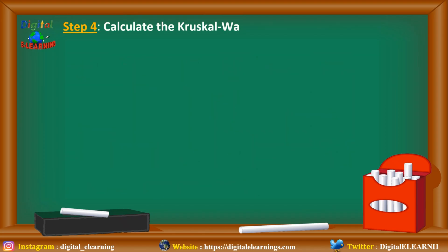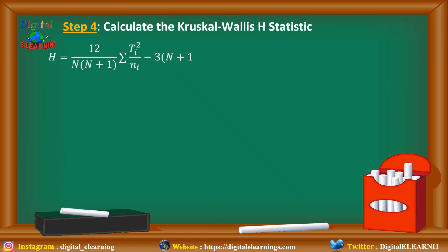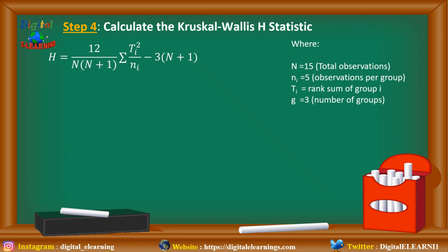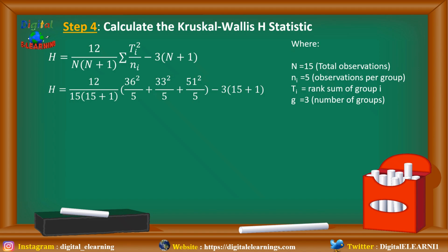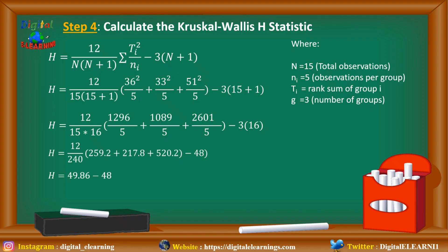Step 4: calculate the H statistic. Using the formula H = (12 / (n(n+1))) × Σ(Tᵢ² / nᵢ) − 3(n+1), with n = 15 total observations and nᵢ = 5 per group: H = (12 / (15 × 16)) × (36² / 5 + 33² / 5 + 51² / 5) − 3 × 16. Solving these values gives an H statistic of approximately 1.86.